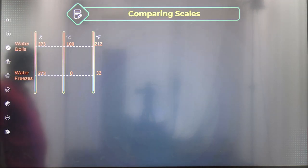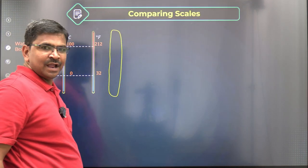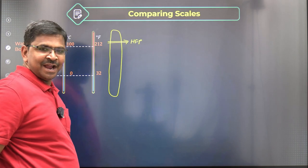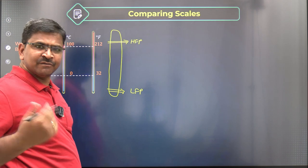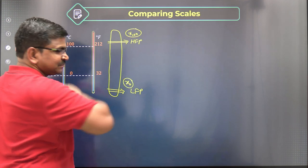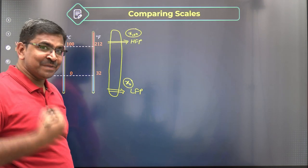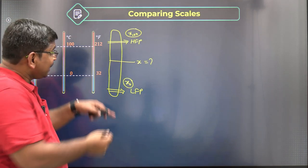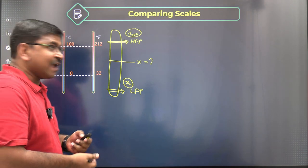Let us focus on conversion. Suppose I take any general scale. In this general scale there will be a higher fixed point — call it X₁₀₀ — and a lower fixed point — call it X₀. Suppose I want to measure an unknown temperature X in this general scale. I want to know what that X value is in Fahrenheit, in Celsius, and in Kelvin.